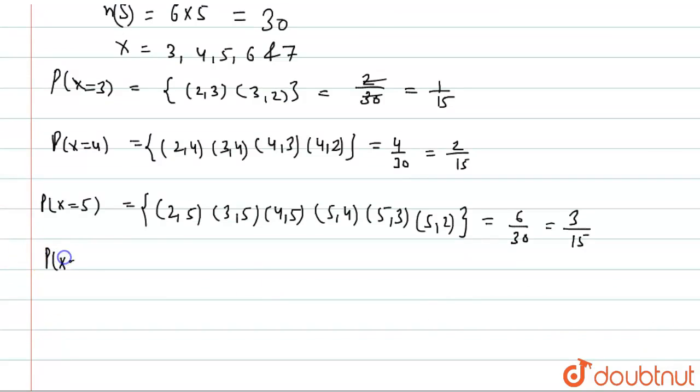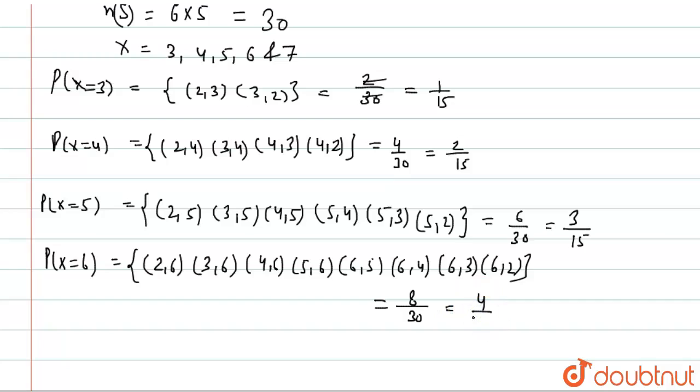Now P(X=6) will be equal to (2,6), (3,6), (4,6), (5,6), (6,5), (6,4), (6,3), (6,2). This will be equal to, this is total 8 events, 8 by 30, which is 4 by 15.